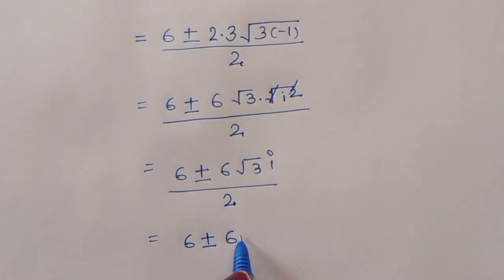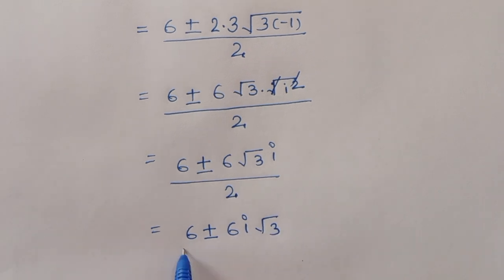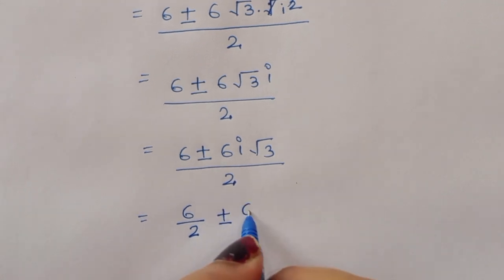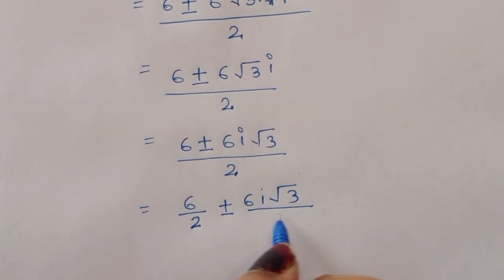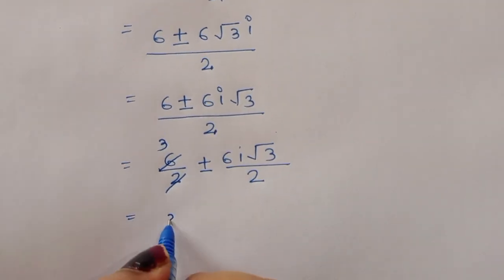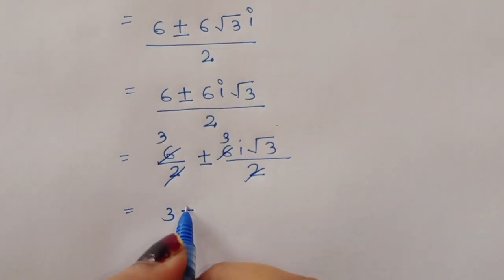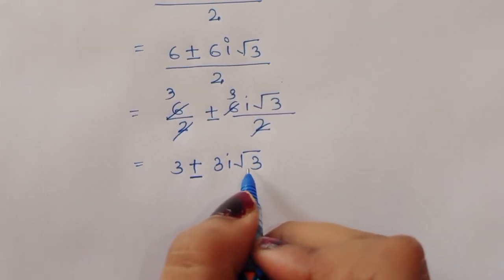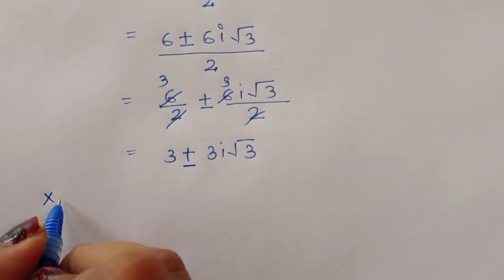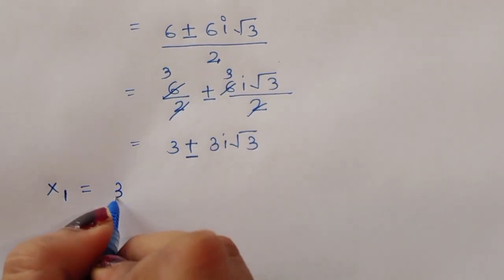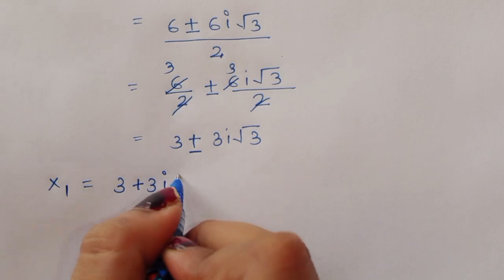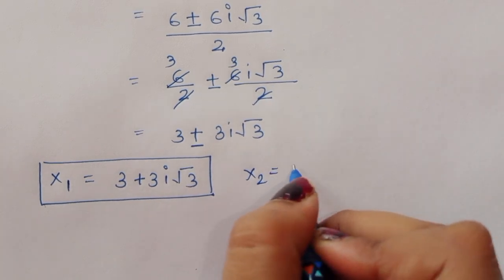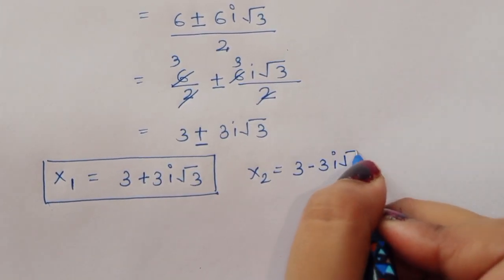So x equals (6 plus or minus 6i√3) divided by 2, which simplifies to 3 plus or minus 3i√3. Therefore, x₁ is equal to 3 plus 3i√3, and x₂ is equal to 3 minus 3i√3.